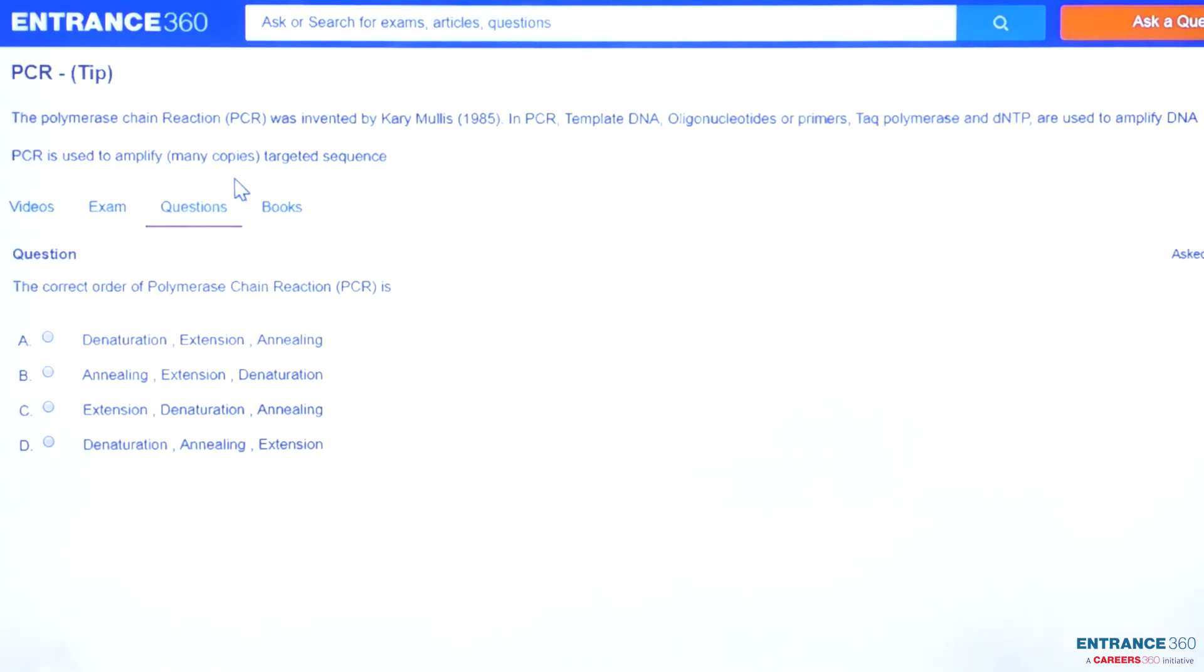The last step is extension, and in this the new strand of DNA is synthesized by the Taq polymerase. So after understanding the concept, now you can see the clear answer, that is denaturation, annealing, and extension. So the correct option is D.